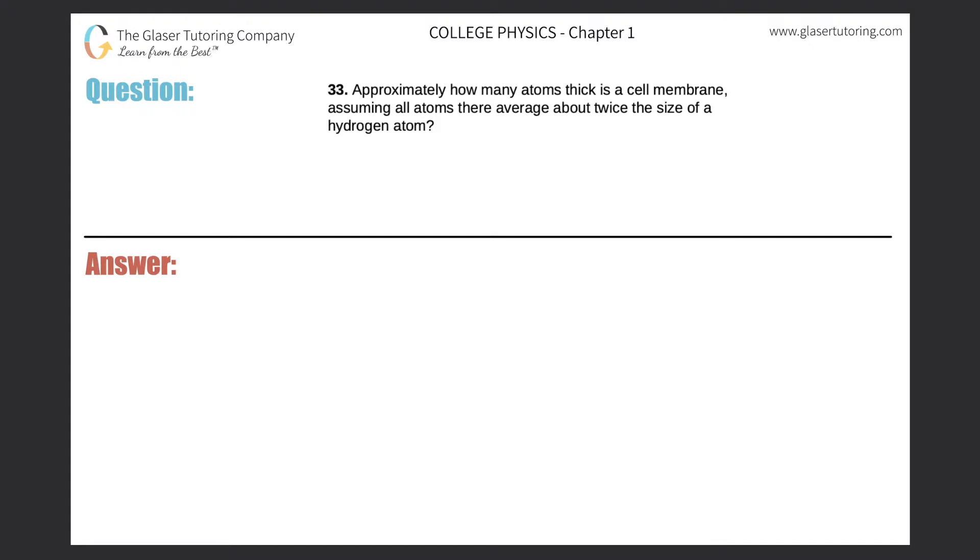Number 33. Approximately how many atoms thick is a cell membrane, assuming that all the atoms there average about twice the size of a hydrogen atom? In order to appropriately answer this question, we do have to make a couple of assumptions.